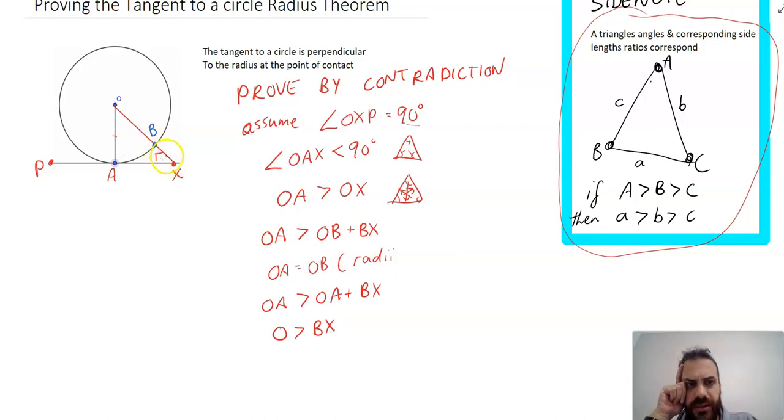BX is a length, and it can't be less than zero. This is our contradiction. We assumed angle OXP was 90 degrees and reached the absurd conclusion that a length is negative. That's our big contradiction.